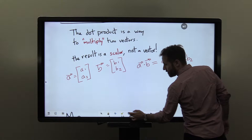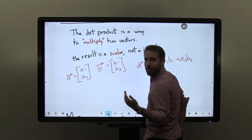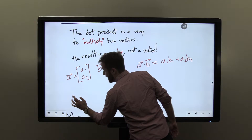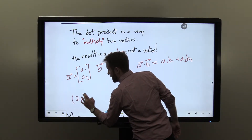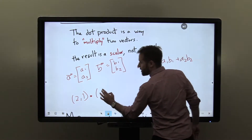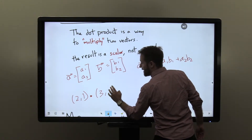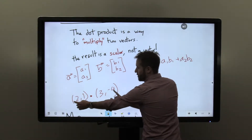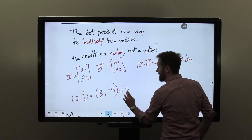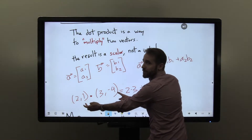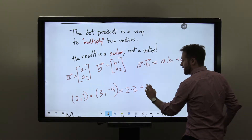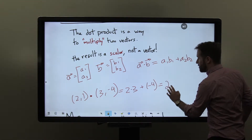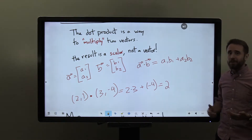To see a concrete example, let's take the vector (2, 1) and dot that with the vector (3, -4). If we do that, I would take the first components — 2 and 3 — multiply those together to get 2 times 3, plus the second components multiplied together: 1 times -4, which is -4. So the result is 2 times 3 is 6, minus 4 is 2. The dot product of these two vectors is the scalar number 2.